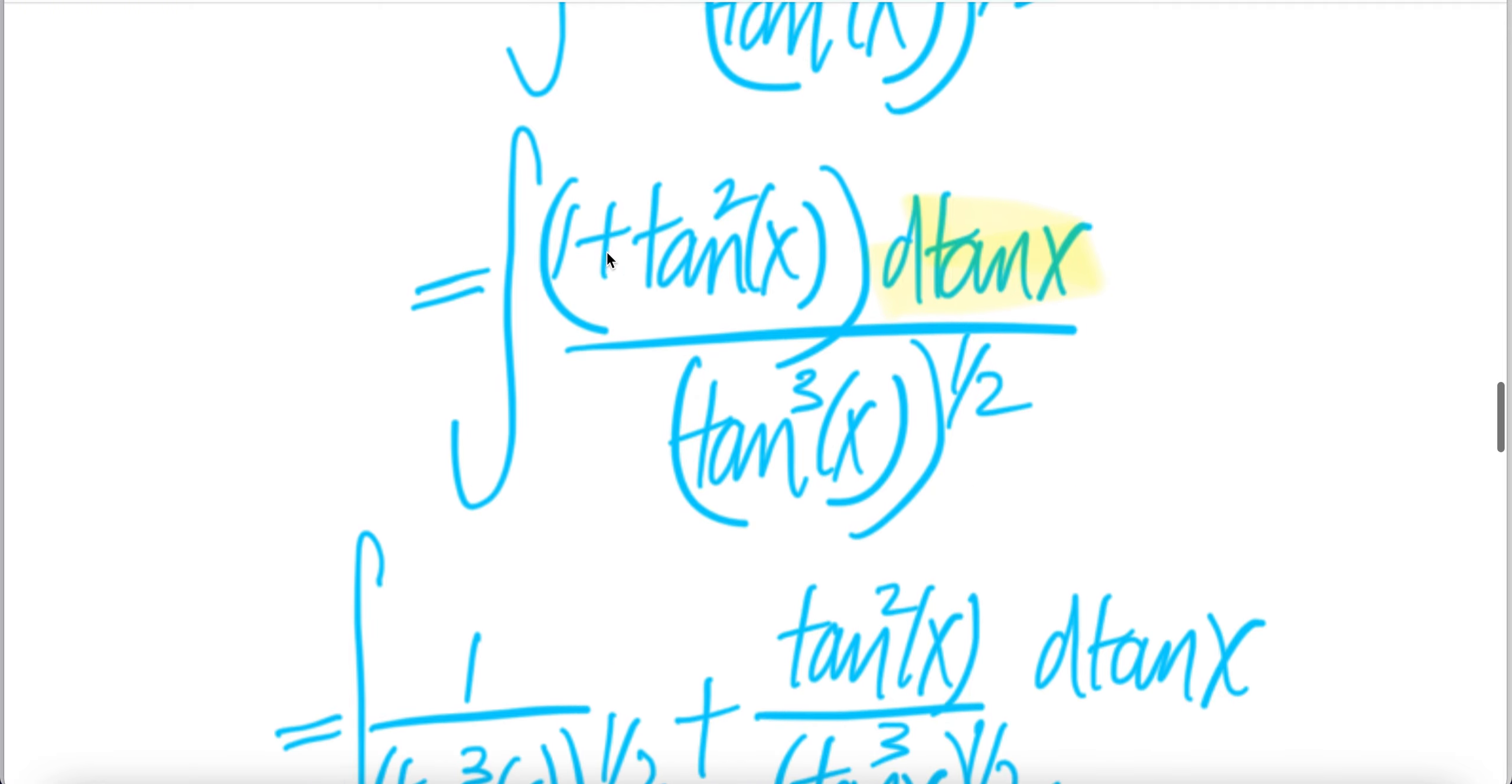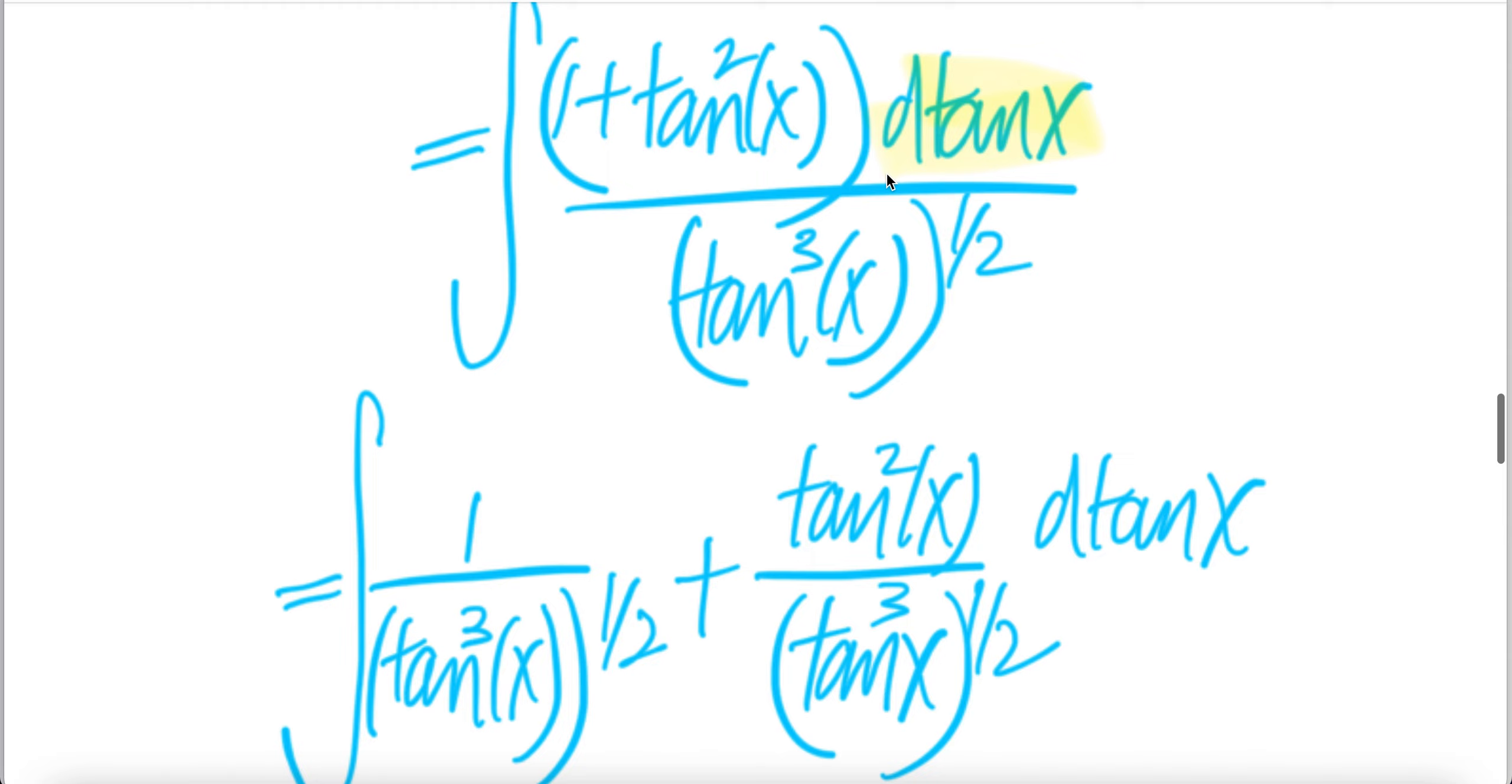Now, there are 2 pieces, 1 piece is 1 over this, second piece is tangent square x over that, d tangent x.